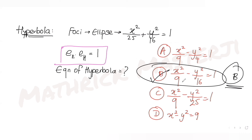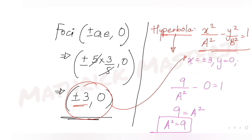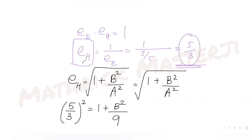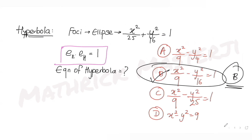To summarize: from the ellipse equation we found a² = 25, b² = 16, and eccentricity e₁ = 3/5. From that we got the foci at (±3, 0), which satisfied the hyperbola equation giving a² = 9. Using the product of eccentricities equal to 1, we got e₂ = 5/3, and from the eccentricity formula we found b² = 16, giving the hyperbola equation x²/9 − y²/16 = 1, which is option B.